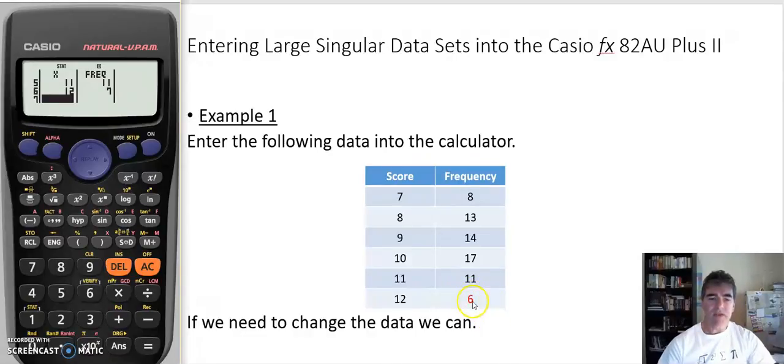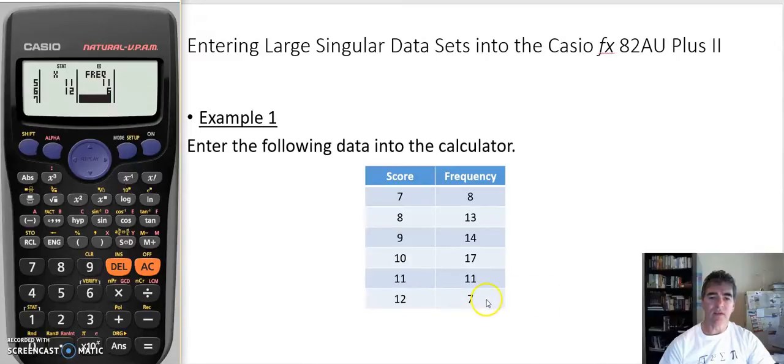What if we made an error with our frequency and it was meant to be a six and I accidentally pressed the seven in there? So what we can do is come across to that one and put it as a six. But that's going to change our thing, so let's put it back to the original one which was a seven. Seven equals. Now we've got our frequencies in there.